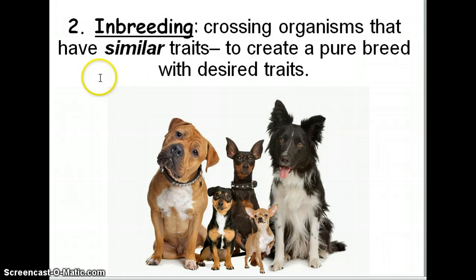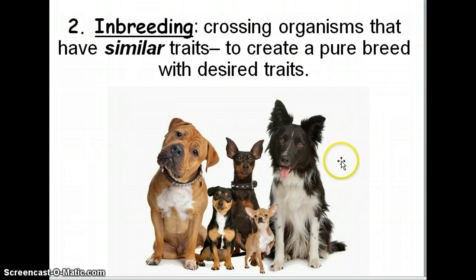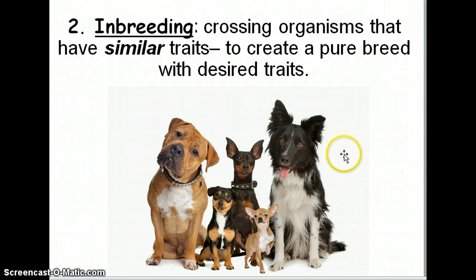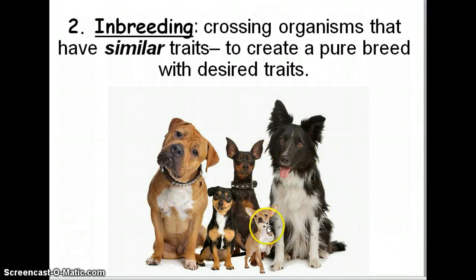Another use of selective breeding is inbreeding. Sometimes we breed organisms purely — we cross organisms that have similar traits because we want to create a pure breed. Gregor Mendel did this with pea plants; he wanted to make sure he had pure breeds before he started his experiments. We tend to do this with dogs because we prefer one particular feature about the animal. The chihuahua is one pure breed, and each of these varieties of dog is a pure breed.